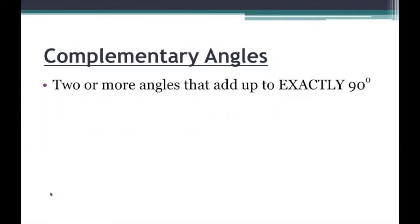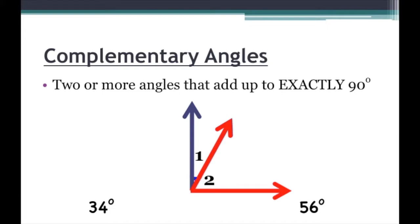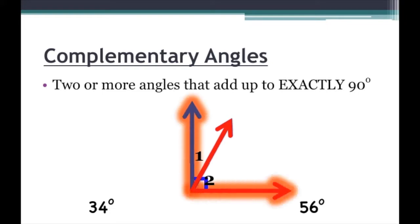So first of all, what are complementary angles? Complementary angles are two or more angles that add up to exactly 90 degrees. Let's take a few examples. We have angle 1 and angle 2. Let's say angle 1 is 34 degrees and angle 2 is 56 degrees. If we put the two together, we have an angle that becomes 90 degrees. Because the two angles share a side, they together form 90 degrees, so that makes them complementary angles. Angle 1 is complementary to angle 2 and vice versa.